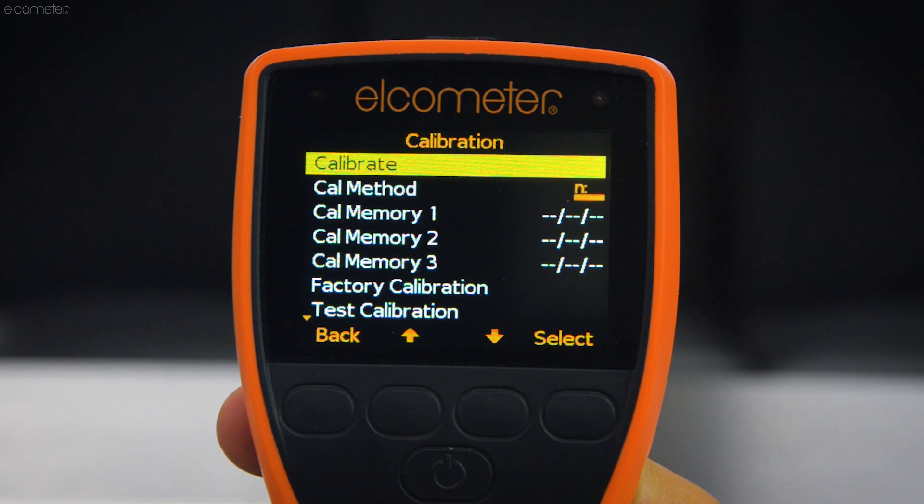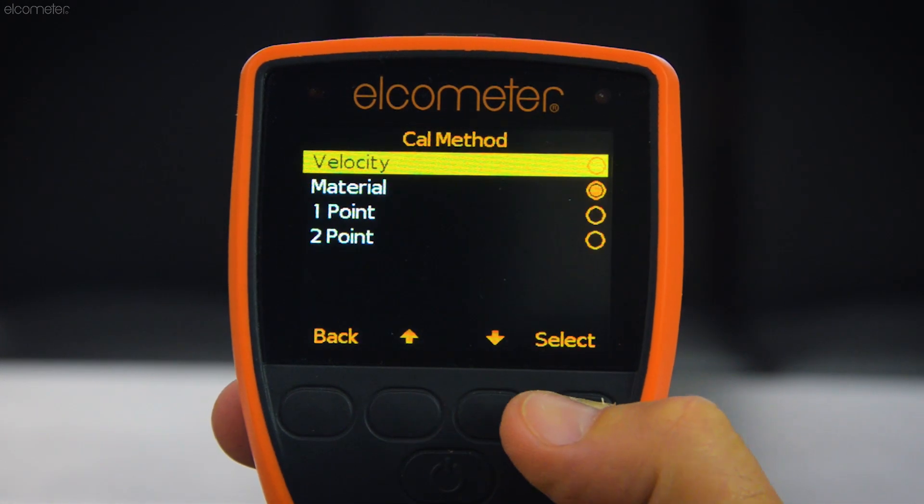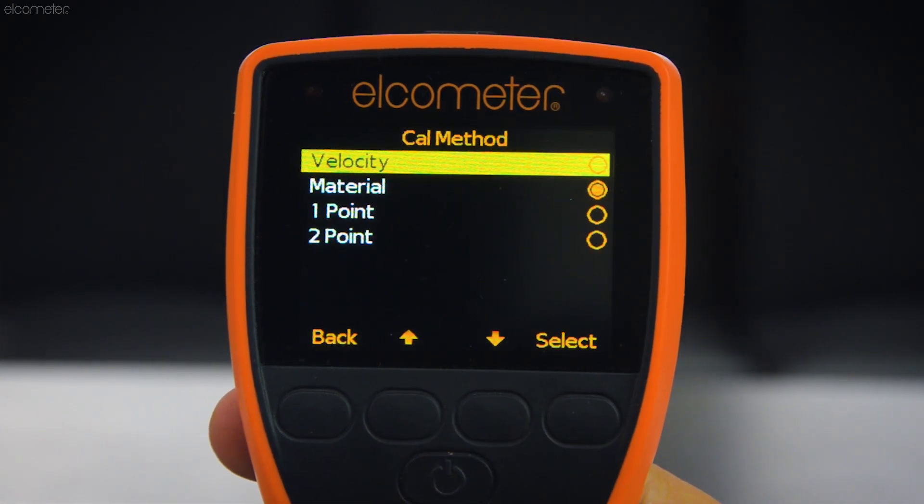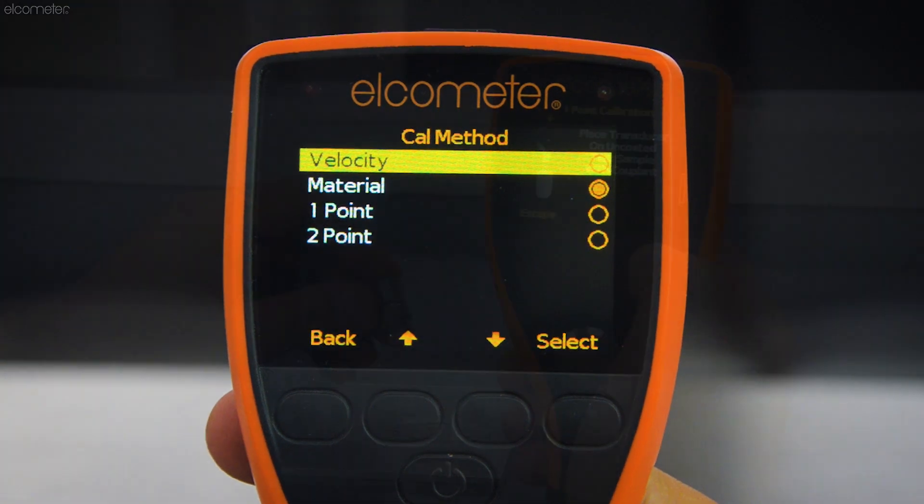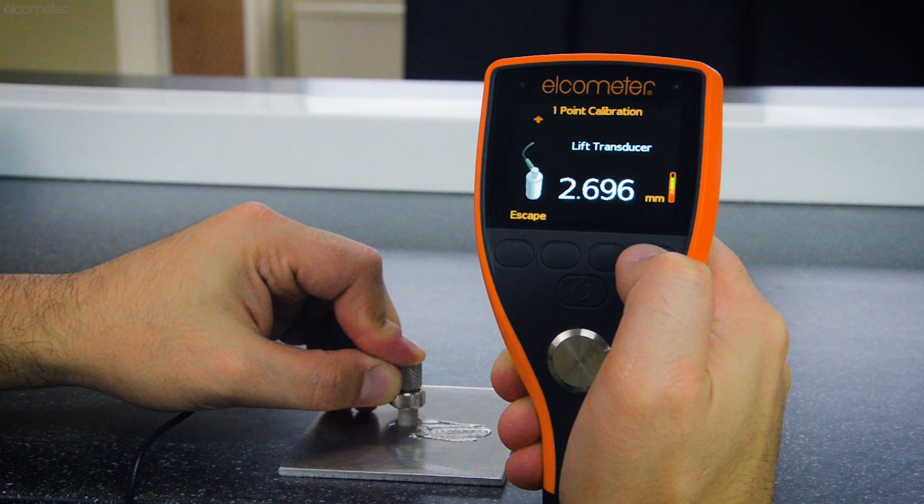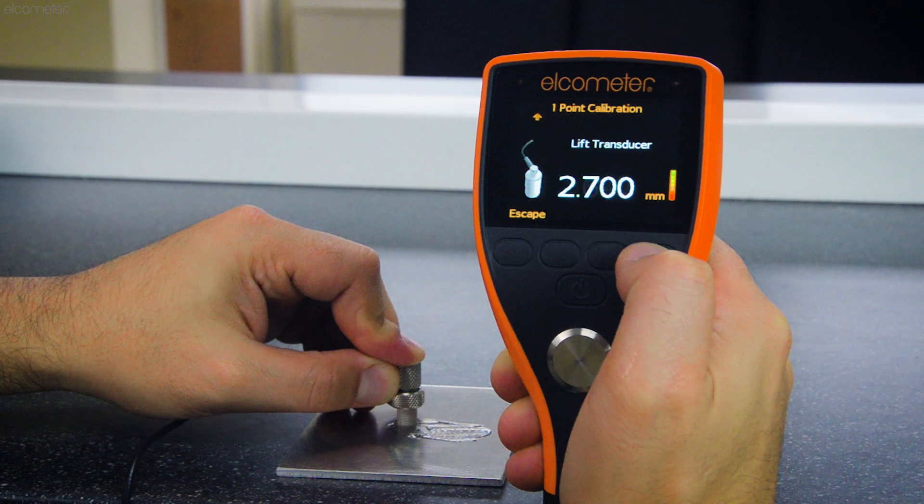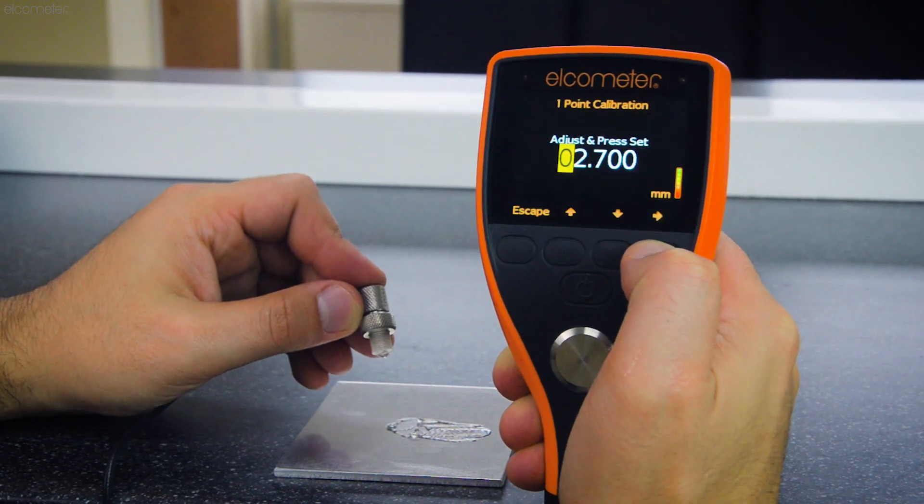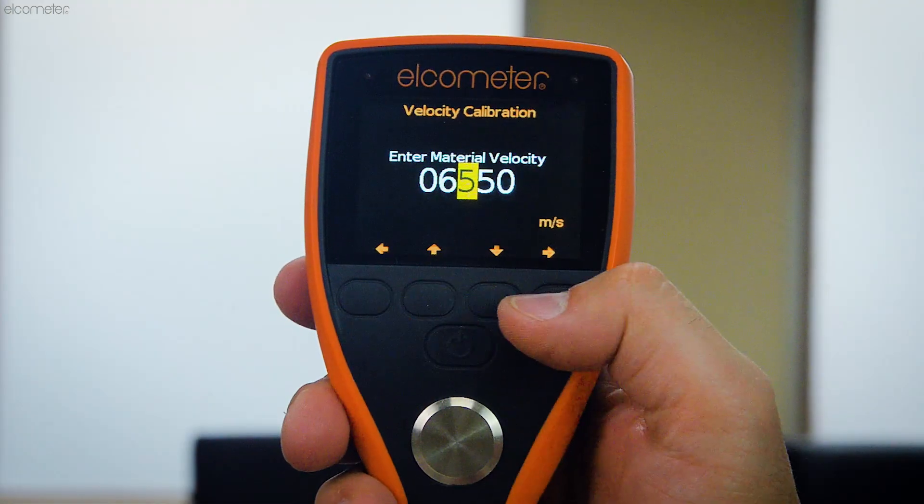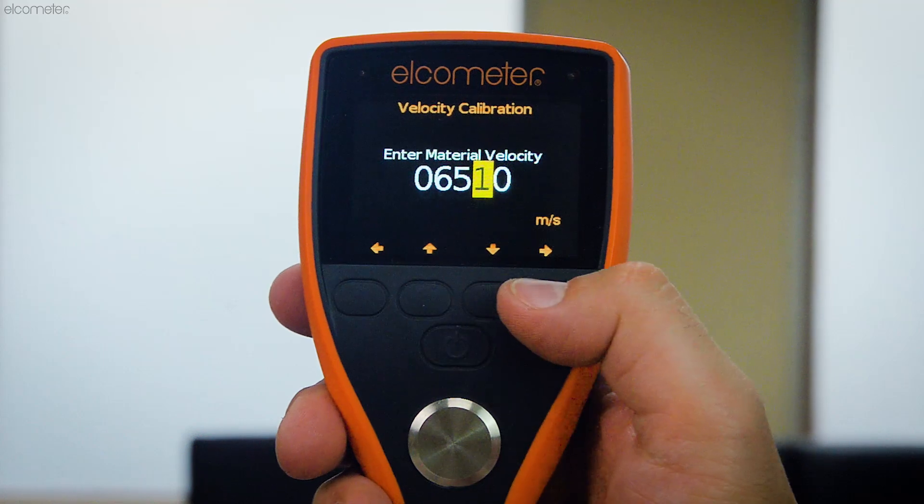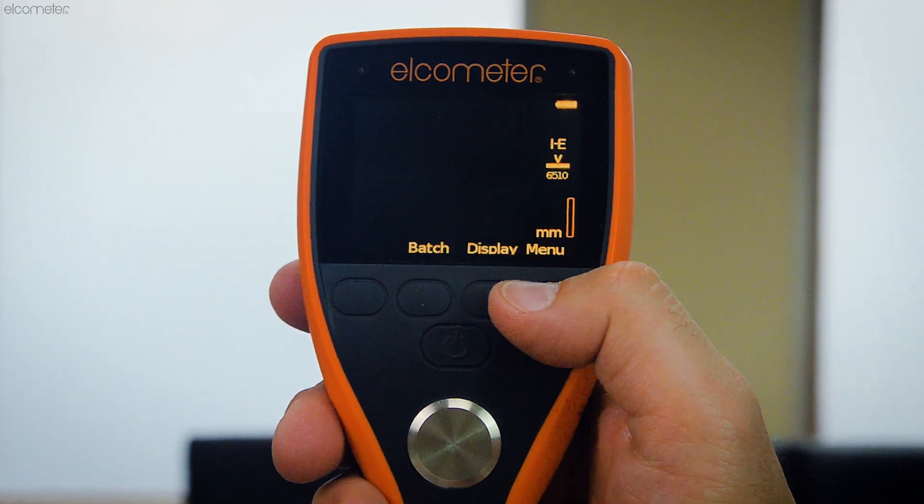In order to easily maintain the gauge's 1% accuracy, the Elcometer PTG-6 and PTG-8 have a range of calibration options with simple on-screen instructions that guide you through each method step-by-step. To find out more about all of the calibration methods, make sure you watch our Ultrasonic NDT calibration videos.